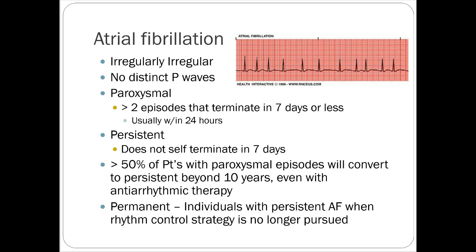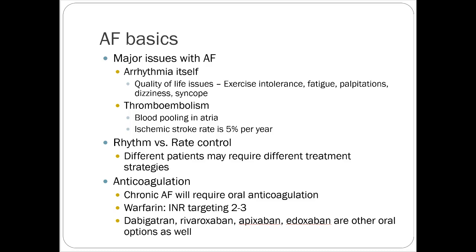Atrial fibrillation presents with an irregularly irregular EKG and no distinct P-waves. Paroxysmal AFib involves episodes that terminate within seven days or less — usually within 24 hours — whereas persistent AFib does not self-terminate in seven days. A lot of people start with paroxysmal AFib as middle-aged adults and it may eventually turn into persistent AFib. Key concerns include the arrhythmia itself causing exercise intolerance, fatigue, and palpitations, as well as thromboembolism — blood pooling in the atria and clot formation — with an ischemic stroke rate of about 5% per year for non-anticoagulated AFib patients.